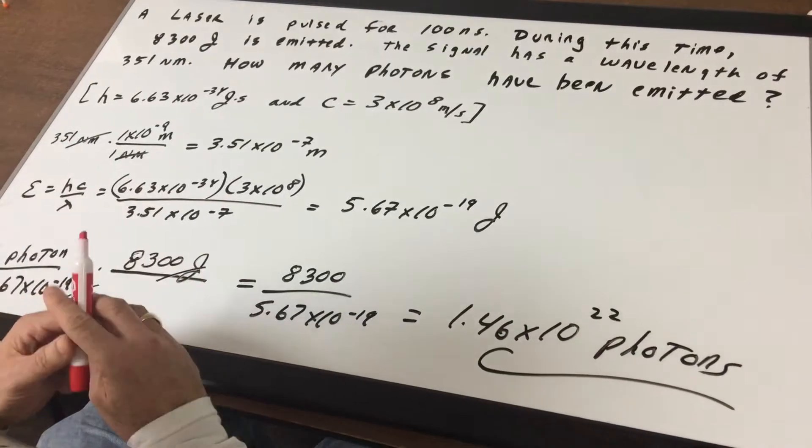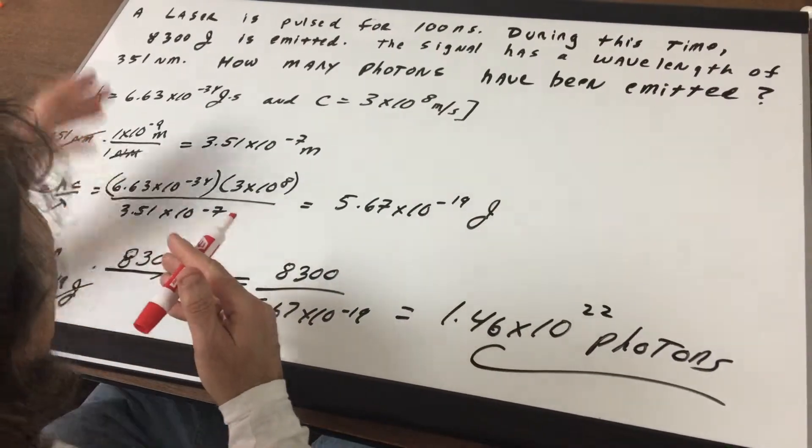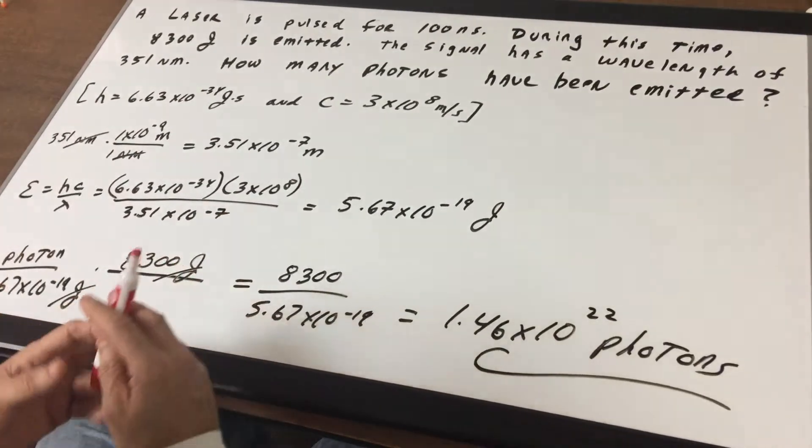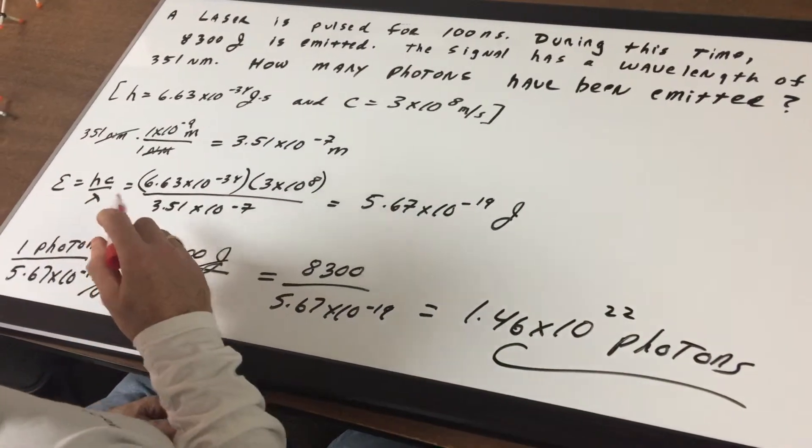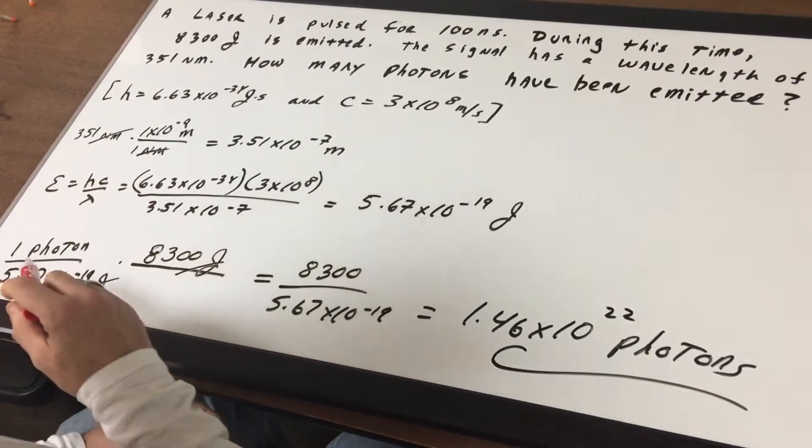Now the next thing I do: I'm given energy. I have energy and I have a wavelength. What we want to do is, is there a formula that relates wavelength and energy? And there is, and that's energy equals hc over lambda.